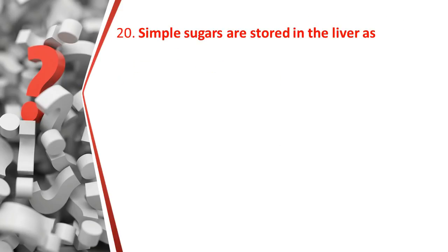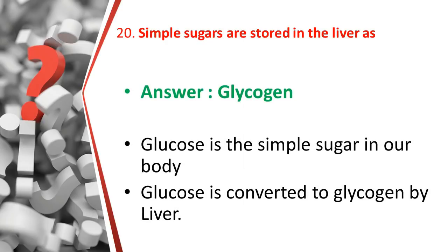The twentieth and last question: simple sugars are stored in the liver as what? The answer is glycogen. Glucose is stored in the body as glycogen in the liver. So the last question answer is glycogen.